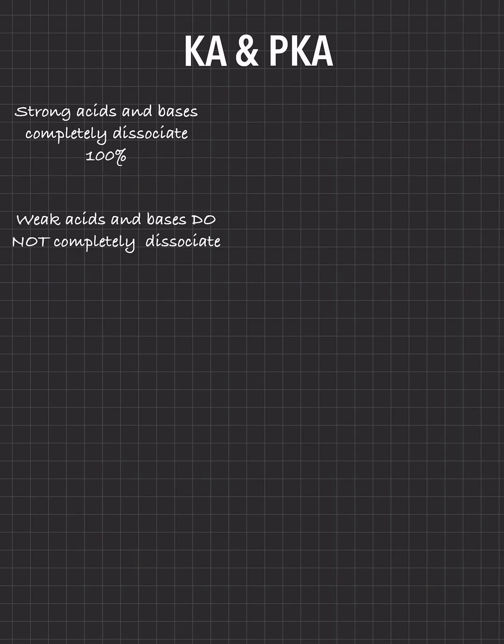For weak acids and weak bases, they do not completely dissociate. The Ka is the dissociation constant, and the pKa is the negative log of the Ka. Strong acids and bases completely dissociate 100%, while weak acids and weak bases do not.